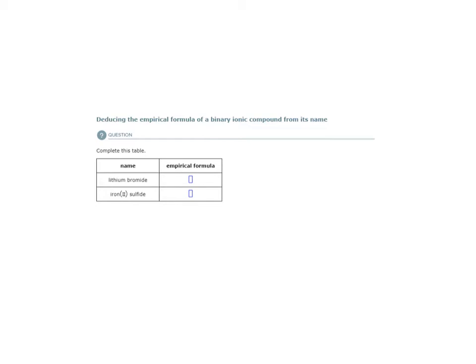Well, the first thing we need to do is write out our cations and anions. We know that this is an ionic compound, so we will have a cation and anion, or multiple of each.